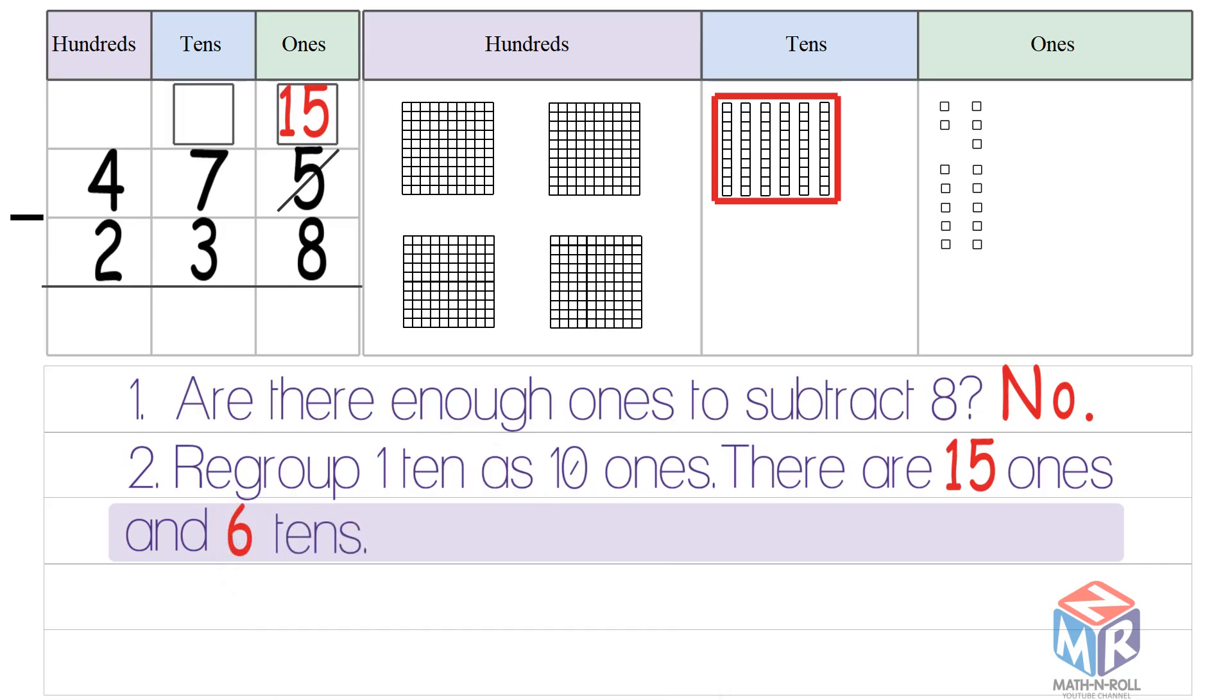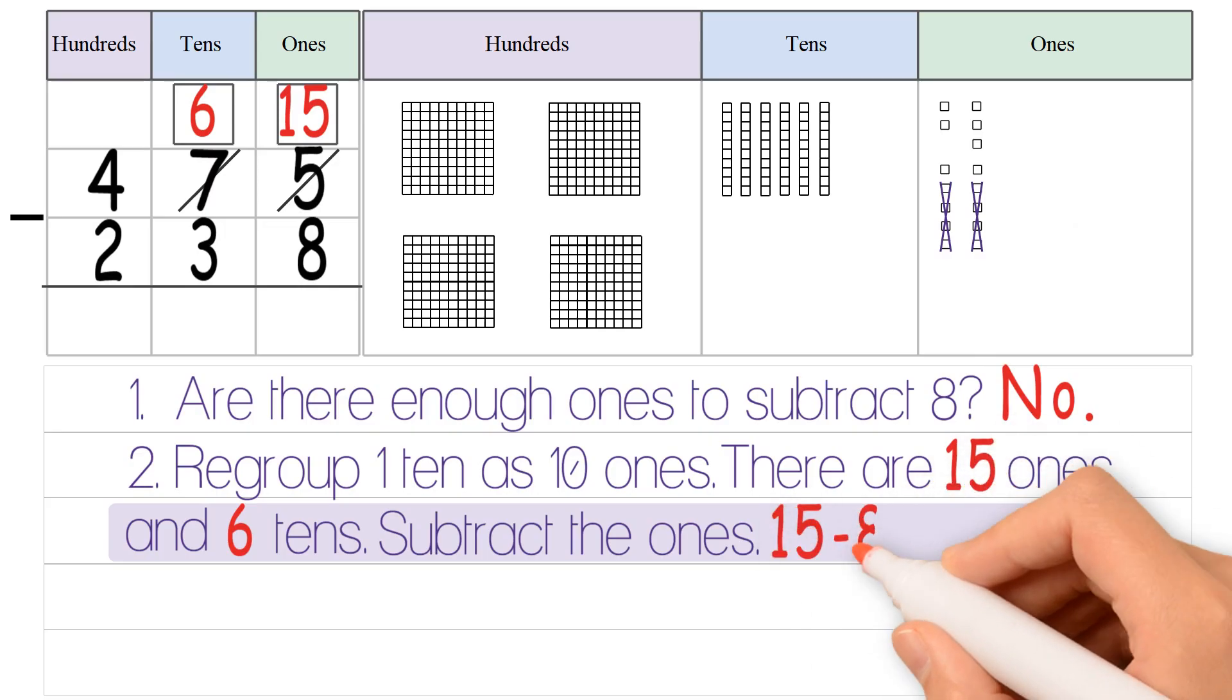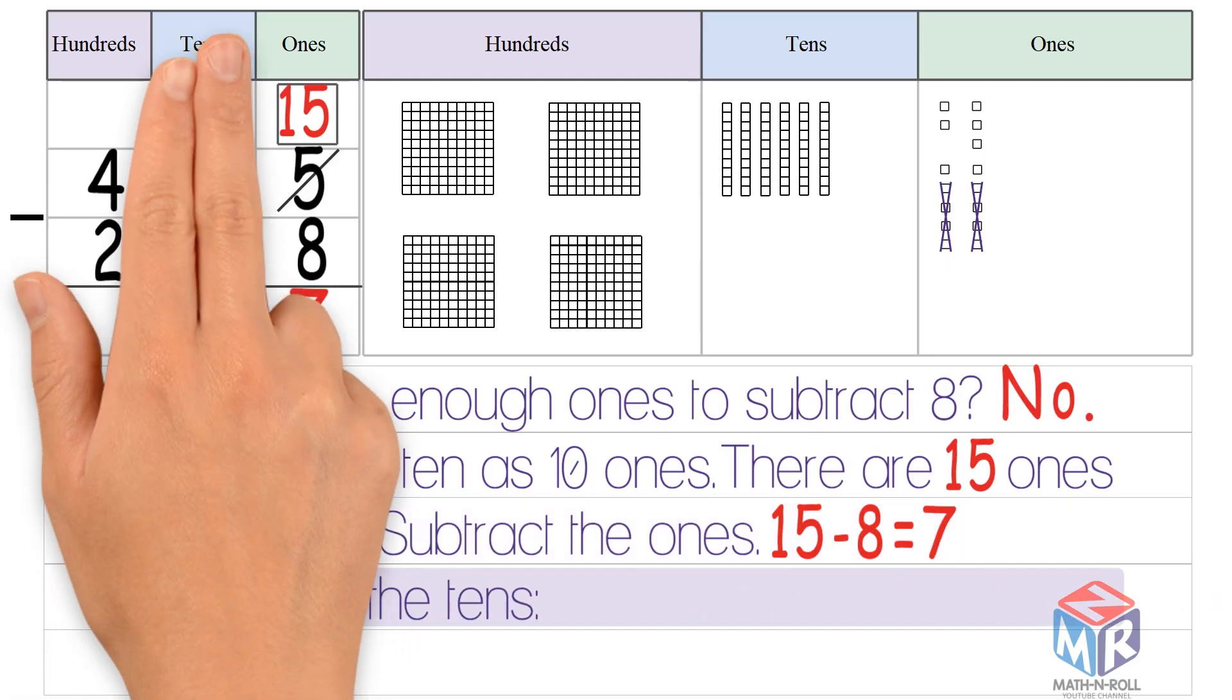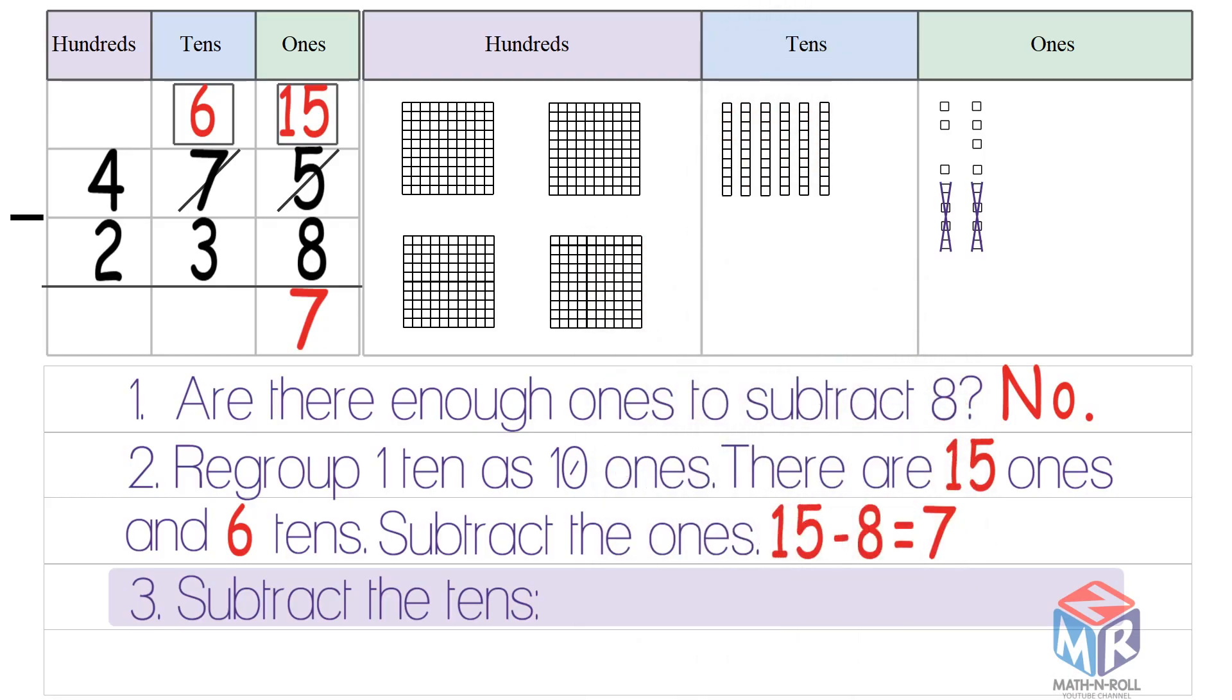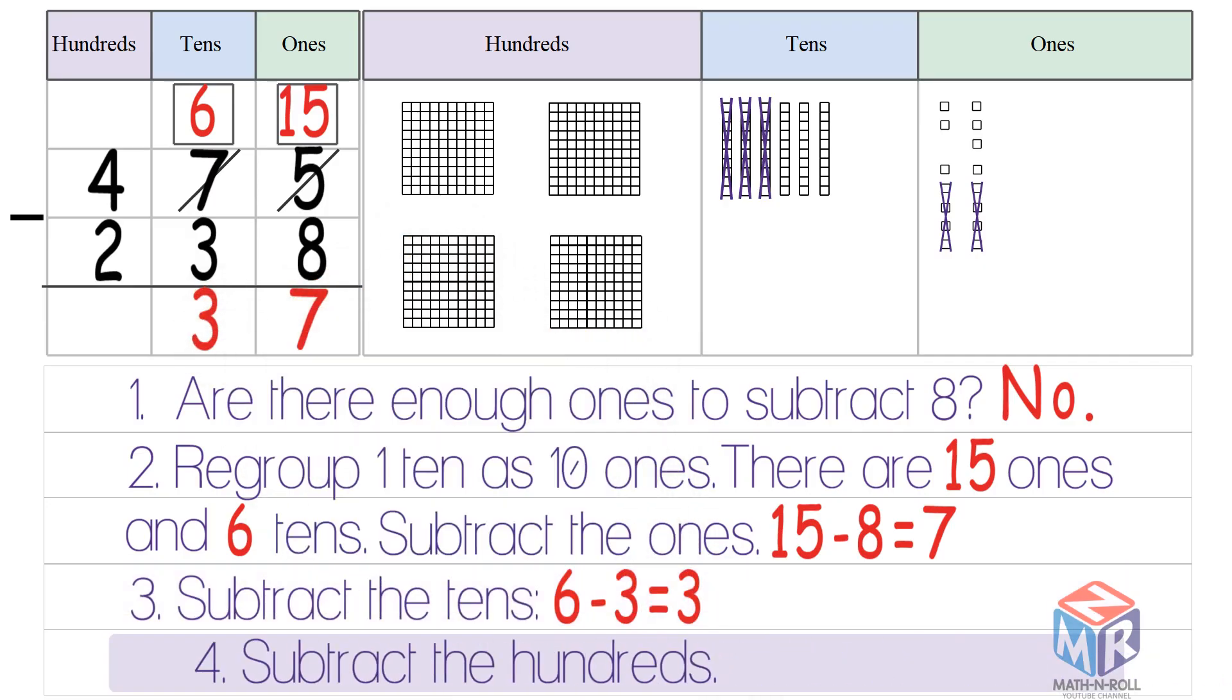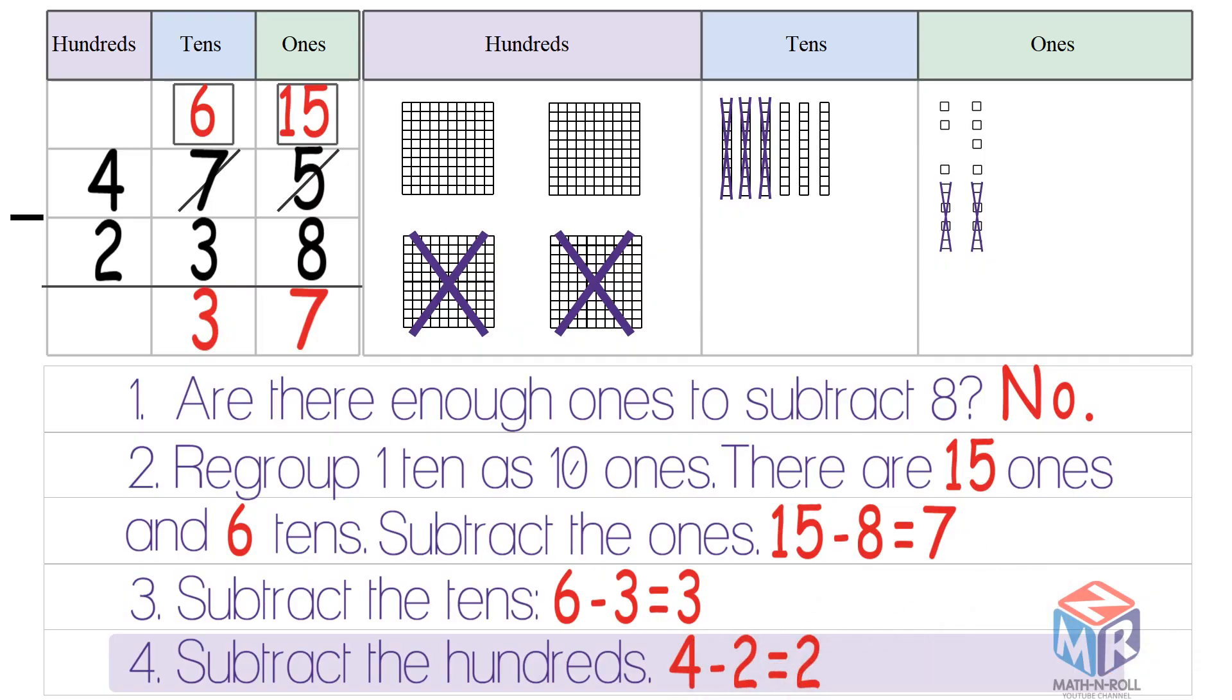And now we have 6 tens left over. First, we subtract the ones. 15 minus 8 equals 7. Then, we subtract the tens. 6 minus 3 is equal to 3. Lastly, we subtract the hundreds. 4 minus 2 is equal to 2. 475 minus 238 is 237.